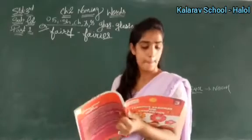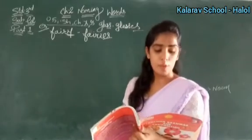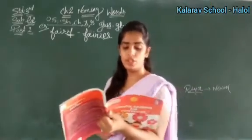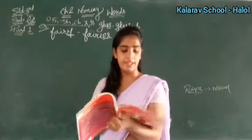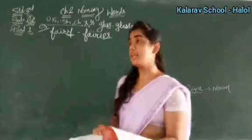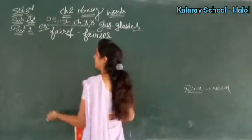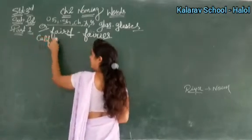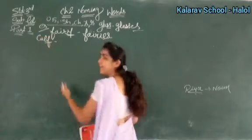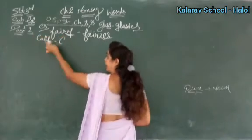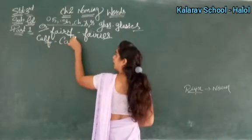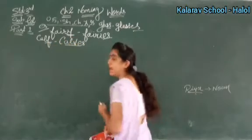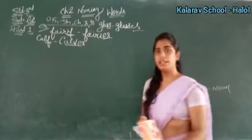Next rule: for most singular nouns that end in F or FE, we change F to V and add ES. Jaise 'calf' — C-A-L-F — last mein F hai, toh F ki jagah V lagayenge: C-A-L-V, aur last mein ES. Calf becomes calves. Clear?